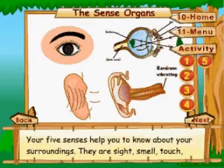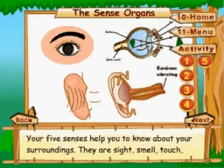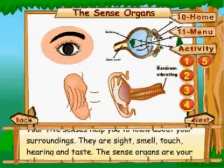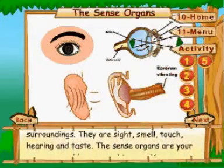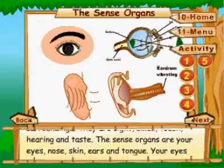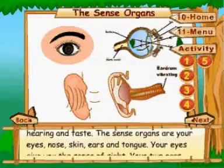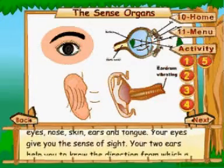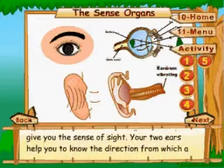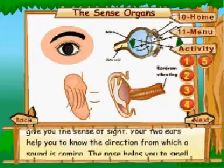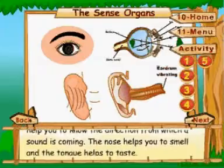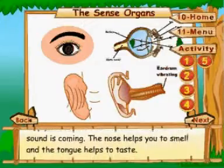The sense organs. Your five senses help you know about your surroundings. They are sight, smell, touch, hearing, and taste. The sense organs are your eyes, nose, skin, ears, and tongue. Your eyes give you the sense of sight. Your two ears help you know the direction from which a sound is coming. The nose helps you to smell and the tongue helps you to taste.